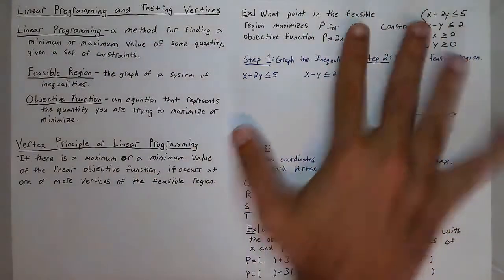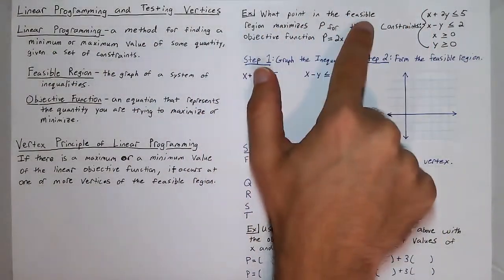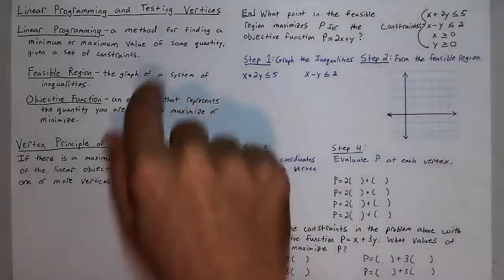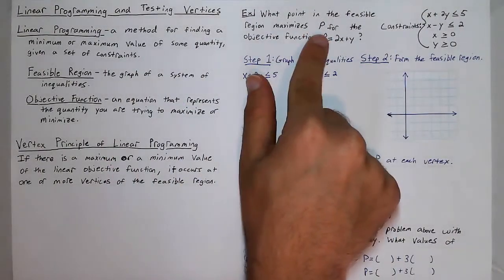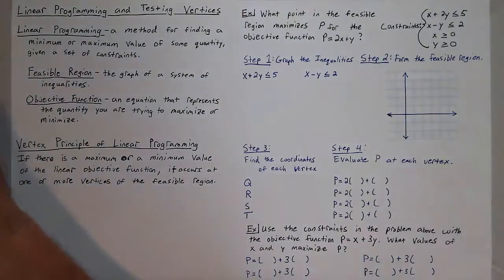So now, let's start to solve this problem here on the right. What points in the feasible region given these constraints, maximizes p for the objective function p equals 2x plus y.